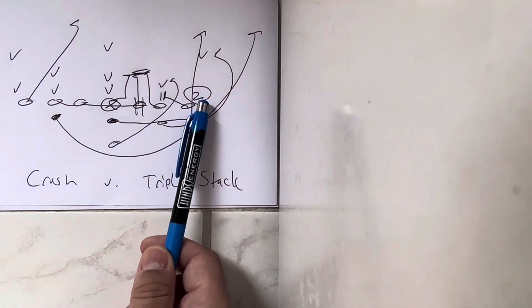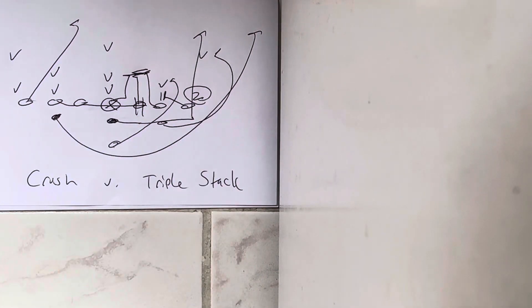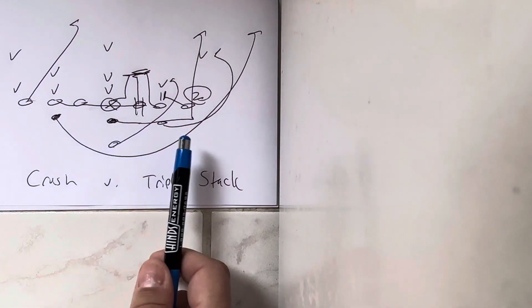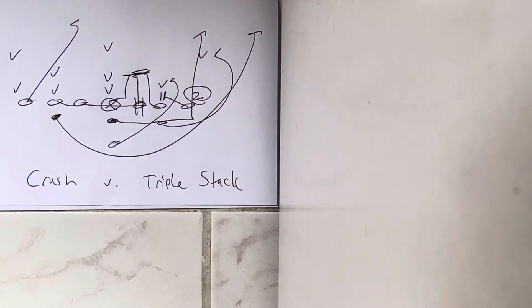Now I'm going to get this question: what if number two tackles the B-back? Well, generally that doesn't happen. Now for those of you who live in the eighties and you guys are outside veer homers, you'll say, well that happened. Well yeah, then in that case the quarterback's going to go and he's going to score.